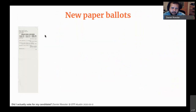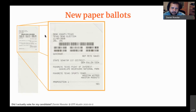The ballot is a long strip of paper that you slide into the machine. It prints out, and if we zoom into the top of the paper, you'll see a section for ballot type, a section for vote barcodes, and then a section for the human-readable portion.